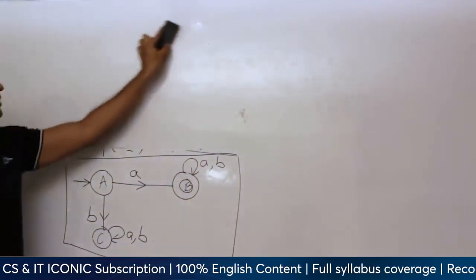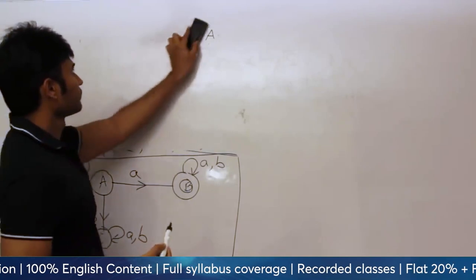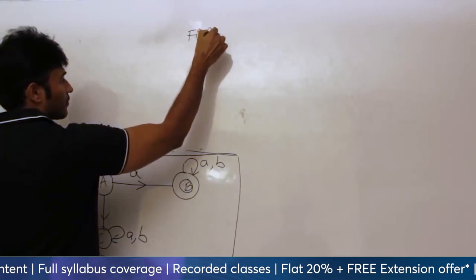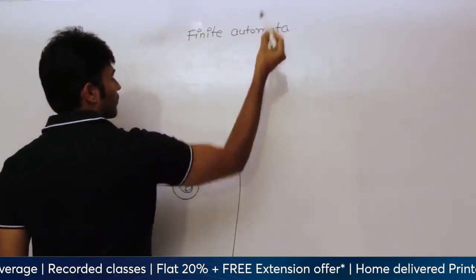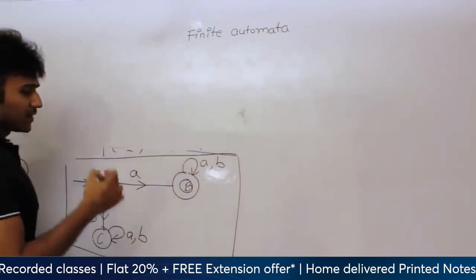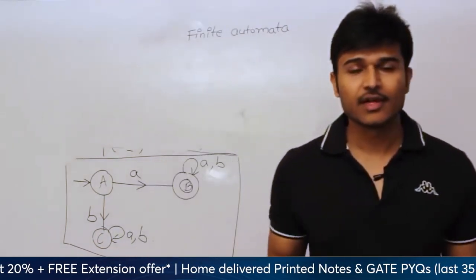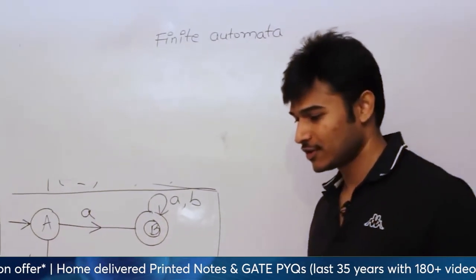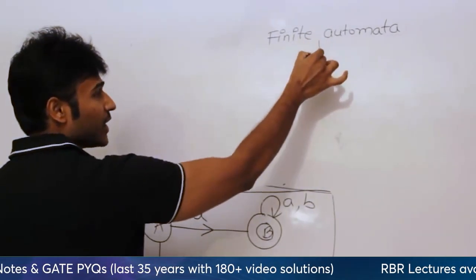Finite automata — actually 'automata' is the plural form and 'automaton' is the singular. But I am going to use 'automata' for everything. The correct word is to use 'automaton', but let's go with 'automata' — that doesn't make a lot of difference when you are solving gate questions.